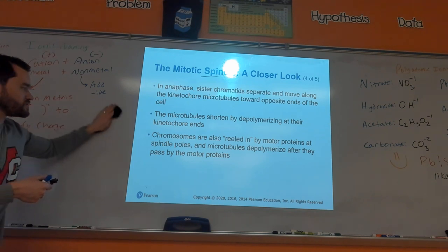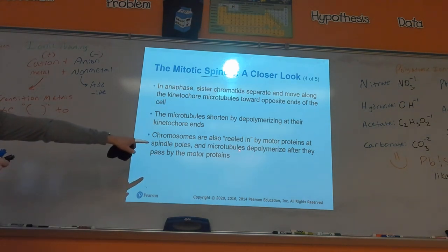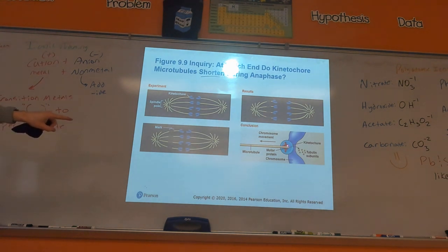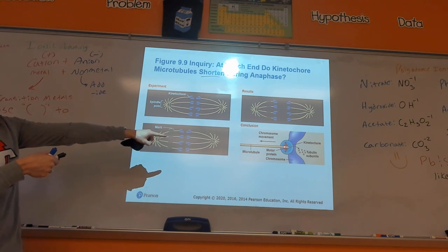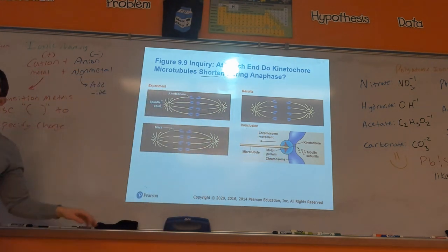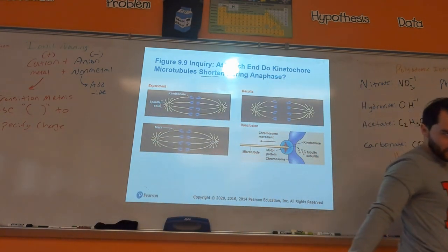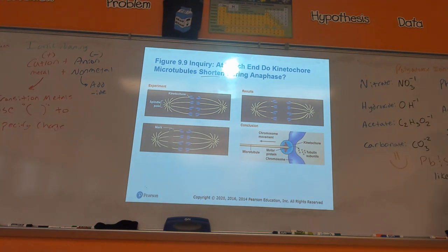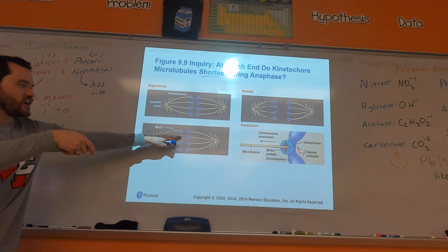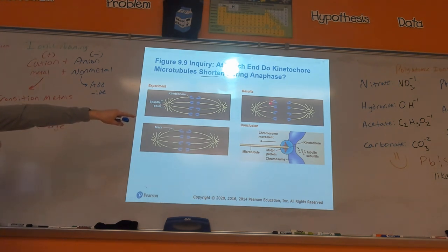So microtubules shorten by depolymerizing at the kinetochore end. The chromosomes are also reeled in by motor proteins at the spindle poles. The tubulin subunits break apart after the motor protein passes by — like a hero running across a bridge in an action movie where the bridge crumbles behind each step until they reach the other side. As the chromosome moves toward the other pole, the end of the spindle shortens. There are animations in MasteringBio that might make this clearer.